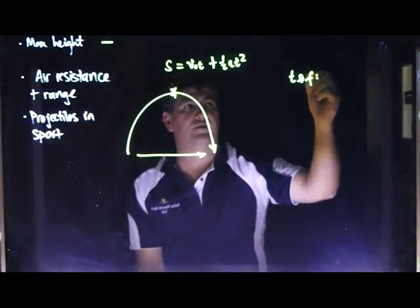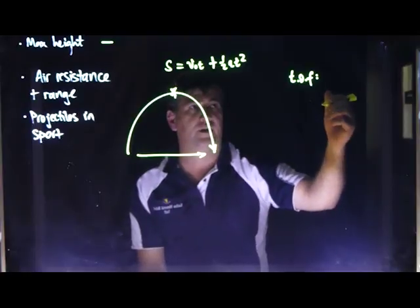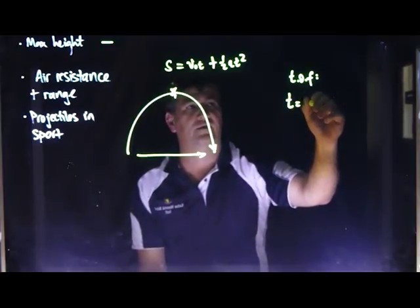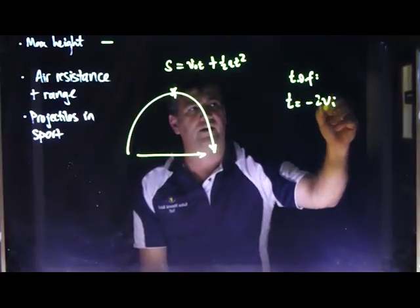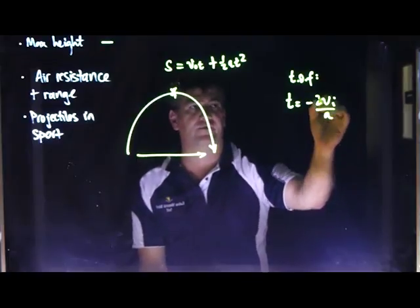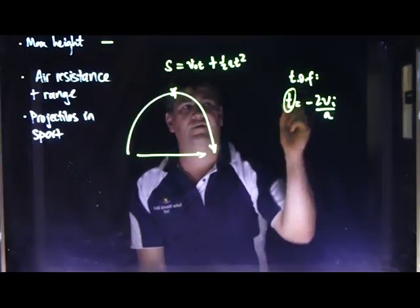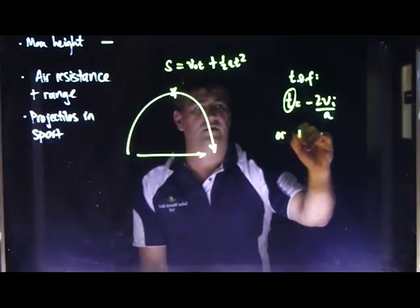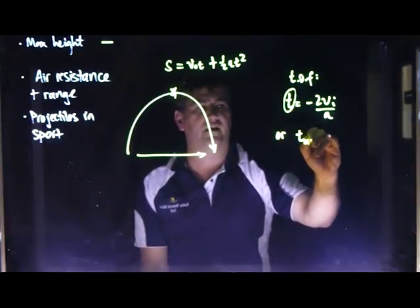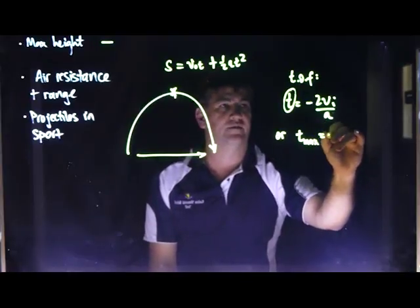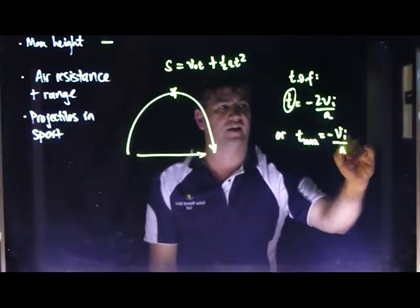So all we need to do is use our time of flight values from before. So t is minus 2 vi on a, or however you felt most comfortable about working that out. And then we halve this value, or t at max height is minus vi over a.